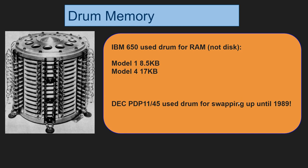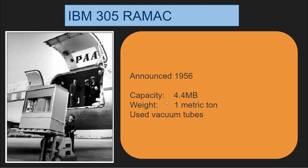Some people think drums are a thing of the 1940s and 1950s, but no — they were used until very late in the 1980s. In a photograph from 1956 or 1957, you see an IBM 305 RAMAC hard disk being loaded into a cargo airplane for delivery. It weighed one metric ton, had a capacity of 4.4 megabytes, and used vacuum tubes for electronics.